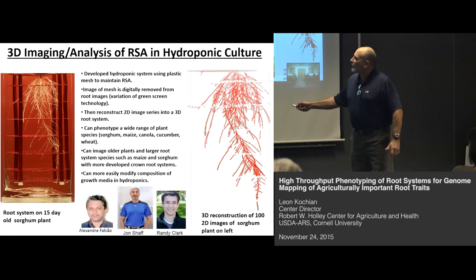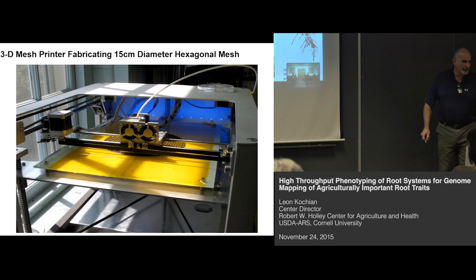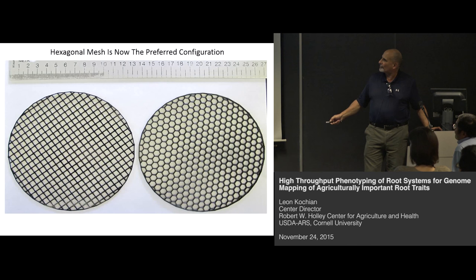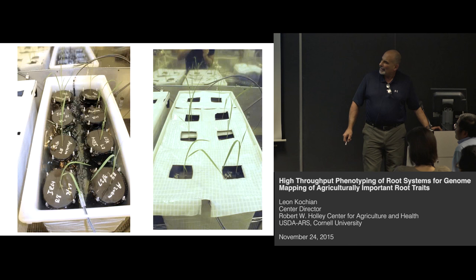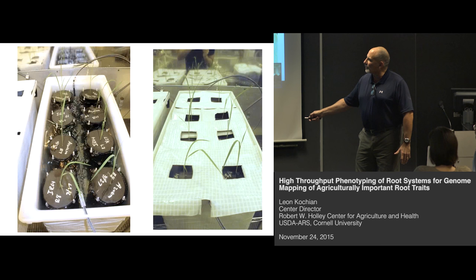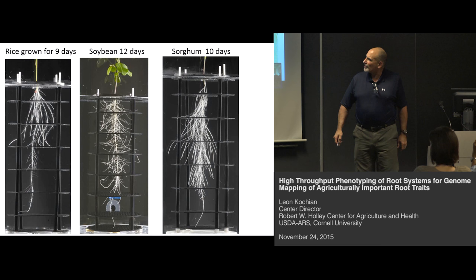The mesh system doesn't yet allow us to measure things like root length because of the cuts from the mesh, and we're working on that. The plastic mesh is 3D-printed and we can play around with its configuration. We grow the plants in hydroponic towers, easily lift them out, place them into our water-filled imaging tank, and put them back. We can now grow rice, soybeans, and sorghum in this system and they all grow quite nicely.